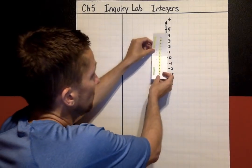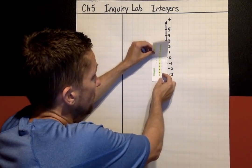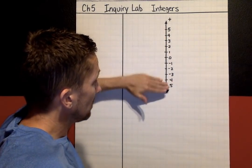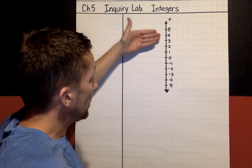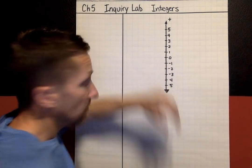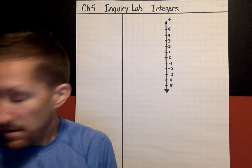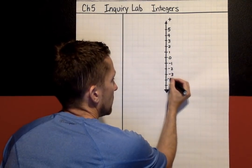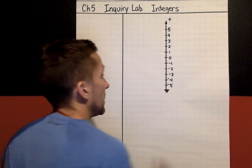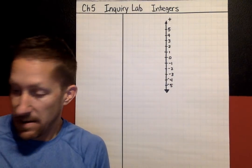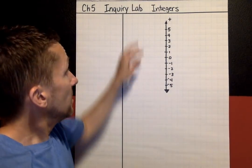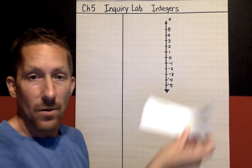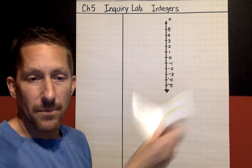You can see how it works the same way. If you were to fold this over, this five would land on this negative five, this four on negative four. Vertical number line, horizontal number line — they work the same way.